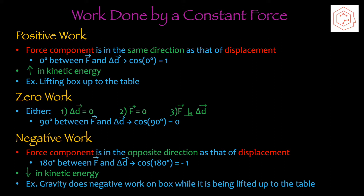As for zero work, there are three different cases in which zero work occurs. Number one, when the displacement itself is zero. Number two, when the force is equal to zero. And number three, when the force acting is perpendicular to the displacement of the object. So when there's 90 degrees between force and displacement, cos 90 is zero, and thus that would result in zero work.